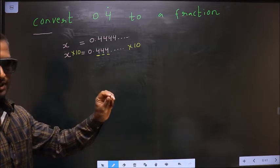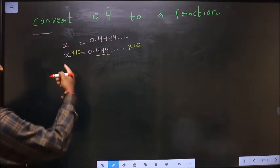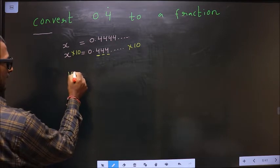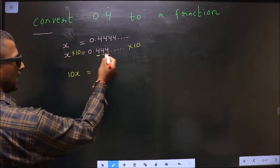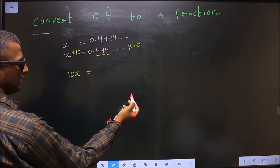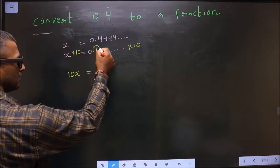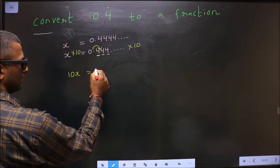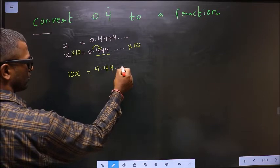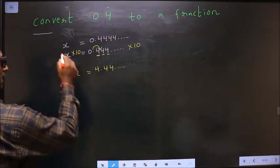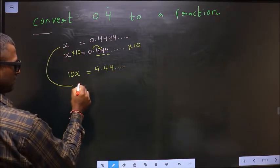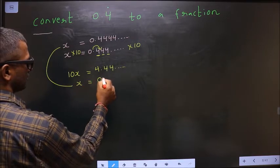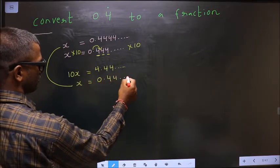Next, x times 10 is 10x. When you multiply by 10, the decimal will shift one place to the right, making it 4.44 and so on. Now I write this below: x equals 0.44 and so on.